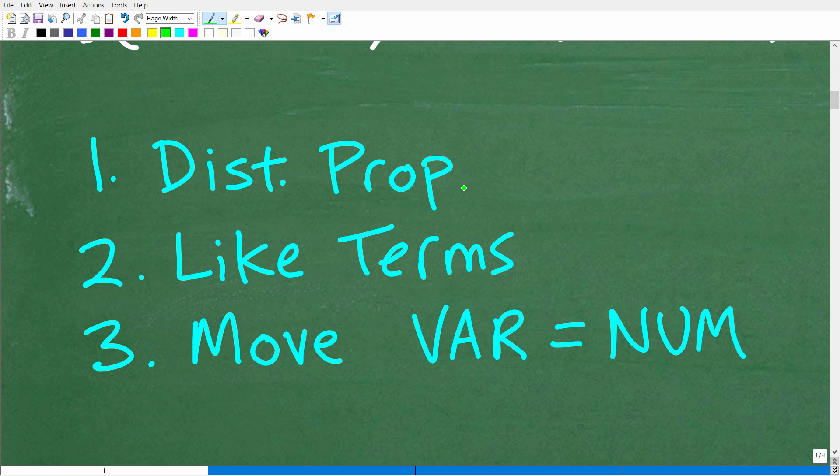So the first thing is, you want to see if there's any distributive property situations. That would mean like a number outside of a parenthesis with like a variable or a sum or difference inside. This is a distributive property situation, which of course we have. So that's where you want to start.